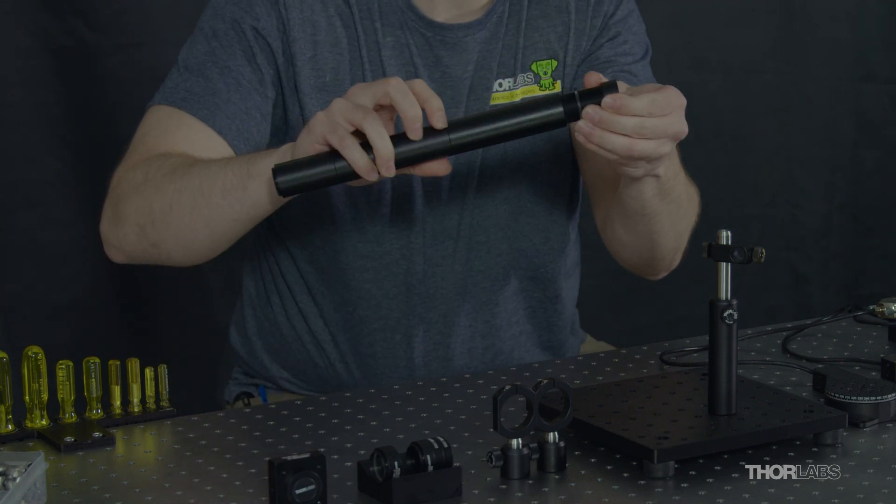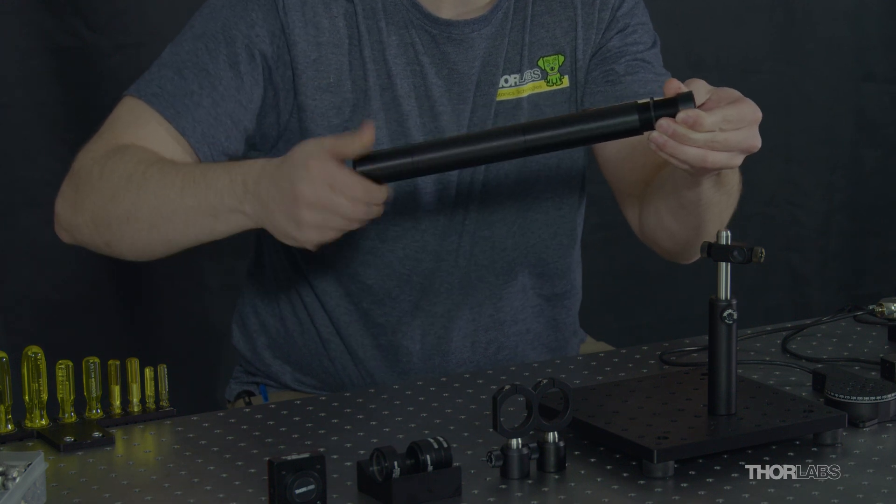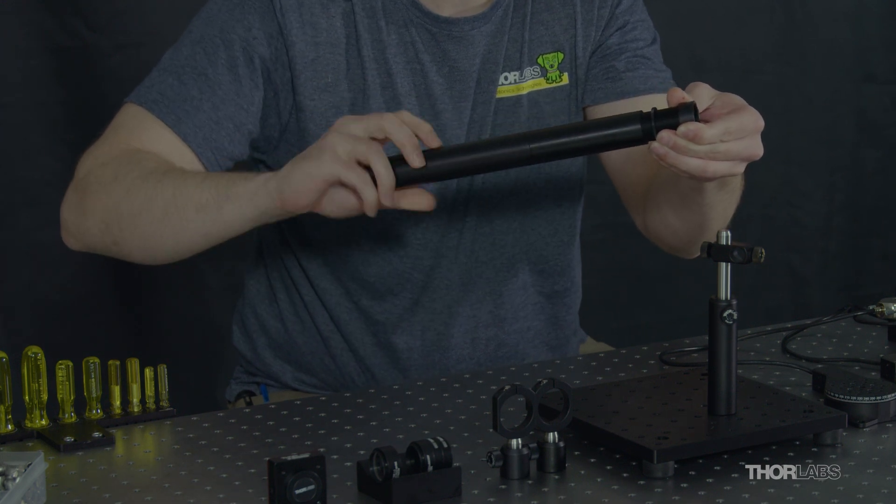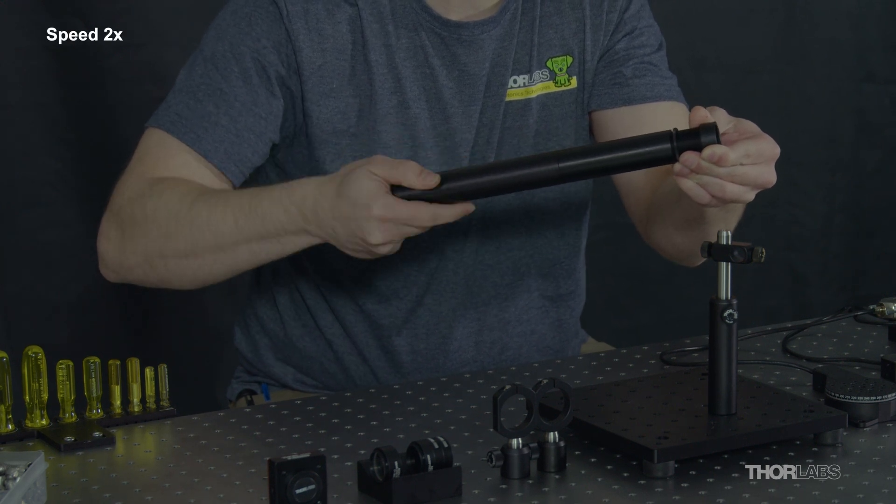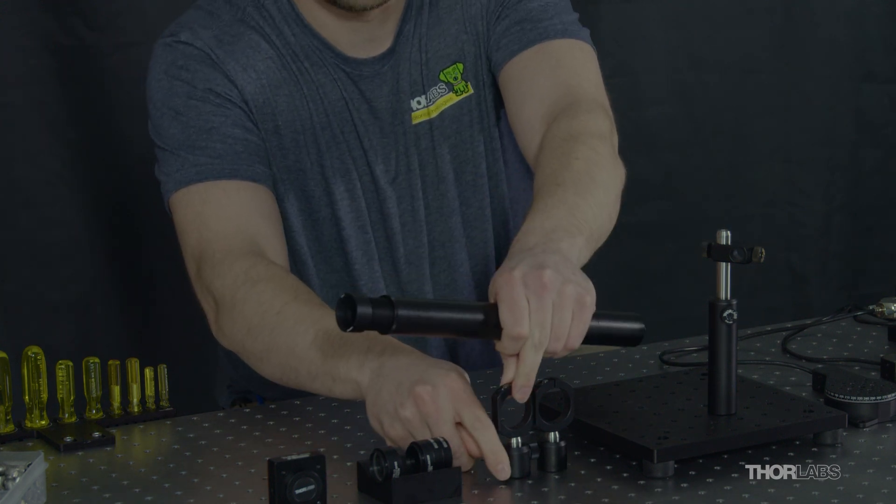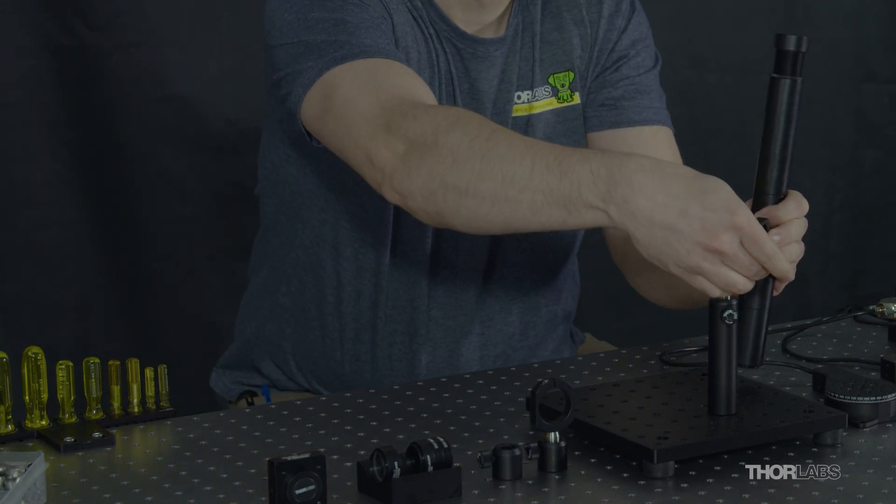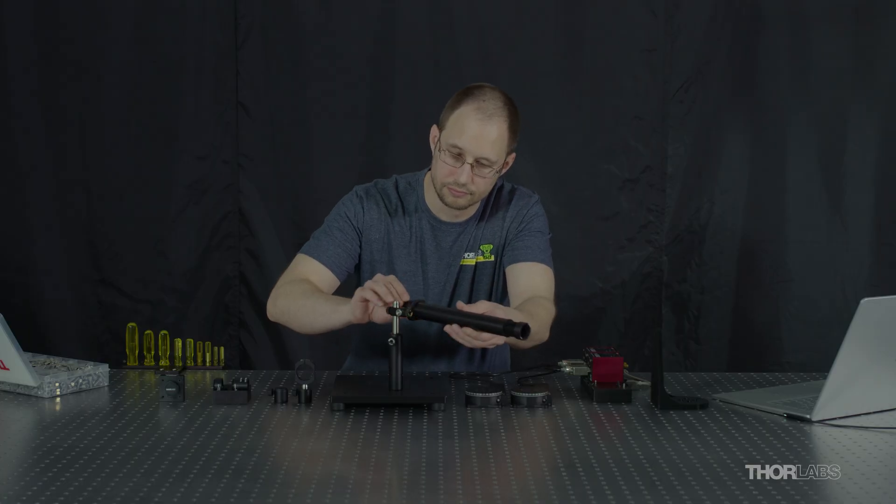A 2 inch lens tube, a 1.5 inch long adjustable lens tube, and this will allow us to adjust the relative camera to sensor distance. For convenience, I'll mount the lens tube assembly in this lens tube clamp and hold it in position.